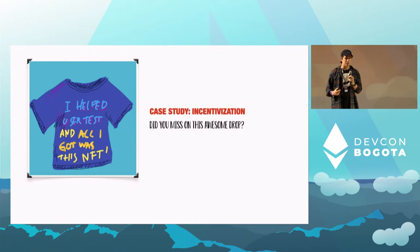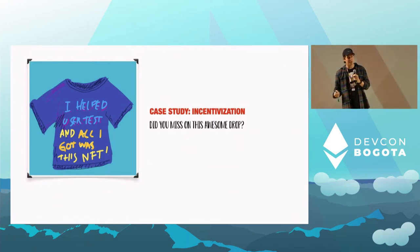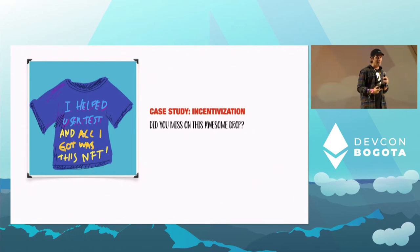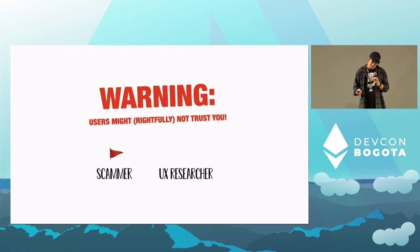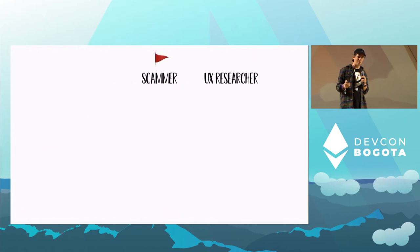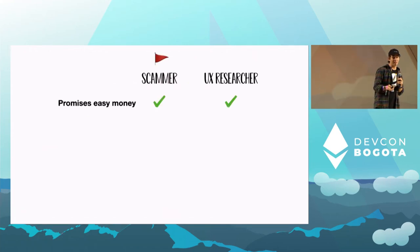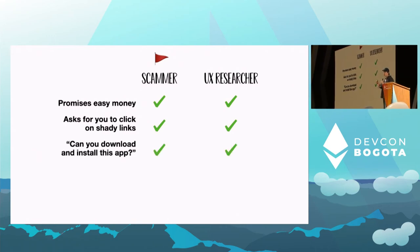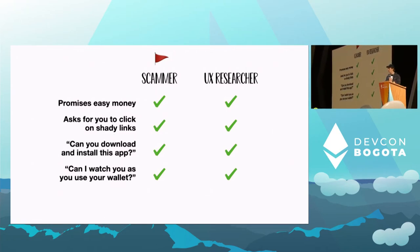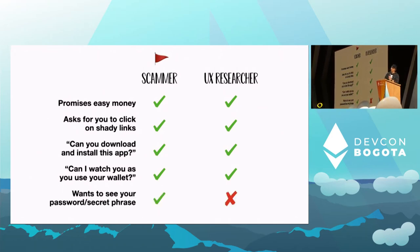Sometimes when you're just having Google Hangout calls, you can be creative. I've tried giving NFTs to people I created, promised to pay gas fees — which when gas fees were expensive was a very nice thing. I was offering people money to watch them do stuff, which is weird. And that's where users might feel a little uncomfortable, because scammers and user researchers have a lot in common: both promise easy money for 10 minutes of your time, ask you to click shady links like Figma links, and ask you to download browser extensions so they can see your screen while you use your wallet.